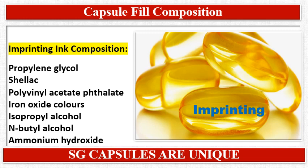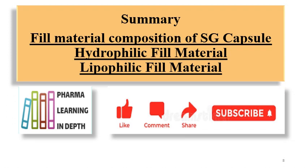Some capsules are imprinted, and the imprinting ink composition should also be taken into consideration. The imprinting ink involves propylene glycol, shellac, sometimes polyvinyl acetate phthalate as a base, iron oxide as a colorant, isopropyl alcohol as a volatile solvent, n-butyl alcohol, and ammonium hydroxide. In this video, we have studied the fill material composition of soft gelatin capsules.